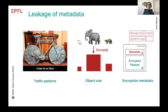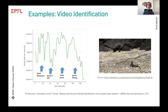This metadata can be the traffic patterns — for example, the ratio of incoming and outgoing packets, the size of the objects that we send, and parameters of the encryption and the recipients. Researchers have used this kind of metadata to actually infer the encrypted communication.